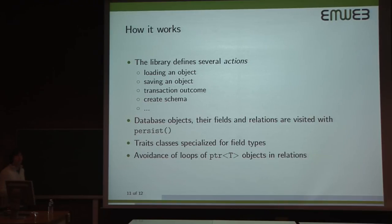So how does this work? All of the magic really happens within this persist method. And the library will define several actions. At the moment, there are 9 to 10 actions defined by the library. And each action is responsible for a particular action. So there is one action that is responsible to load an object. There is one for saving an object. There is one to examine the transaction outcome, and so on. And so the DBO layer will visit your objects using this persist method, and it will pass the right action that is applicable to what it wants to achieve. There are also traits classes specialized for field types. And we will avoid any loops of pointer objects and relations. And this is how our shared pointer memory management will work.